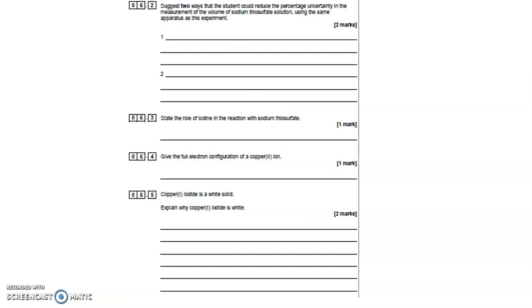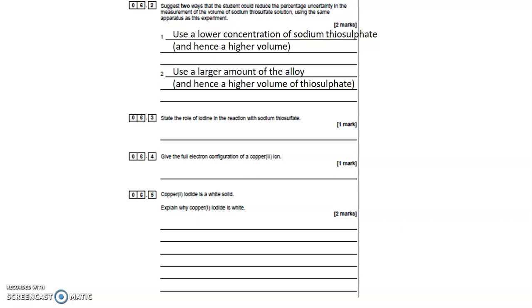Suggest two ways in which the student could reduce the percentage uncertainty. Well the percentage uncertainty goes down if you take a bigger measurement of something. So how can I get a bigger volume of sodium thiosulfate used? I could use a lower concentration of it. A lower concentration would mean I've got a larger volume for the same number of moles. The other way of doing it would be to use more of the alloy. So more of the alloy would need more of the sodium thiosulfate.